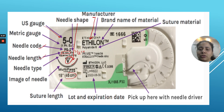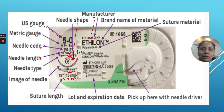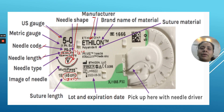The packing also shows the length of the suture — this one is 45 cm, though sutures also come in 76 cm or other lengths. For continuous sutures you need a longer thread; for interrupted sutures a shorter one works and is easier to handle. If you run out you can simply open another packet.